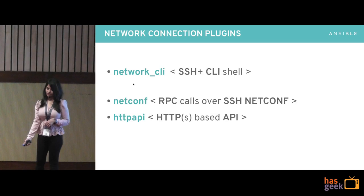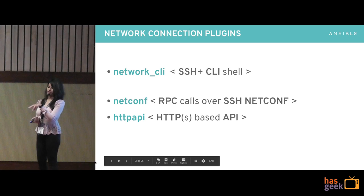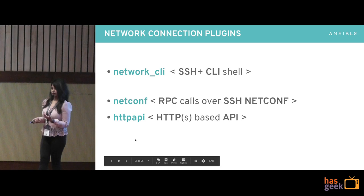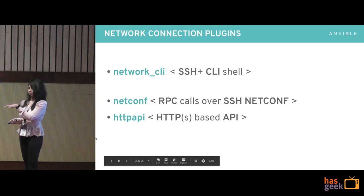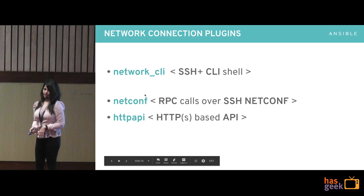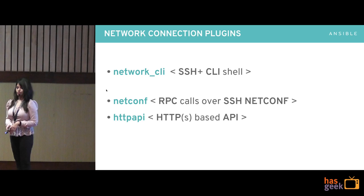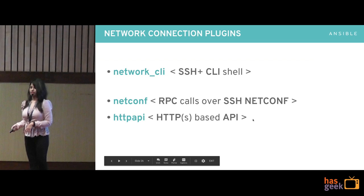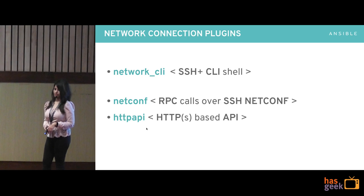Since most of you are into Linux automation, you don't have to specify a connection plugin in your playbooks because it defaults to SSH. But for networking, when you connect to a device it's a CLI shell environment, so we've written a network CLI connection plugin that connects via SSH and implements the CLI shell. We also have a Netconf connection plugin — it's XML-based and sends and receives RPCs over SSH via a Netconf subsystem. And we have HTTP for network devices — Cisco Nexus supports NX API and Arista EOS supports EAPI, so we've written an HTTP API connection plugin that talks over HTTPS or HTTP.